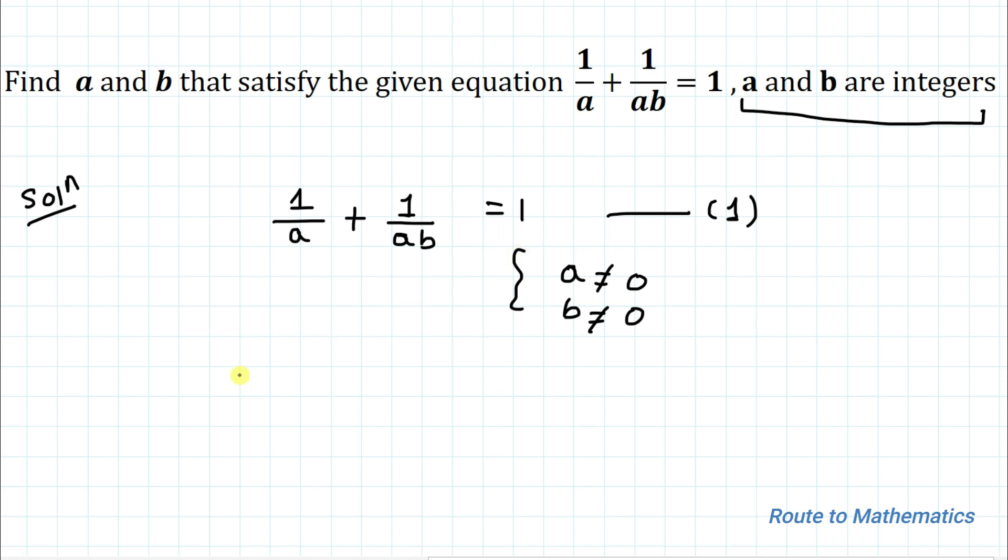Okay, in the next step I will isolate a from this given equation. So for that I will take LCM. So in the denominator part we have a multiplied with ab, and in the numerator part we have ab plus a equals to 1.